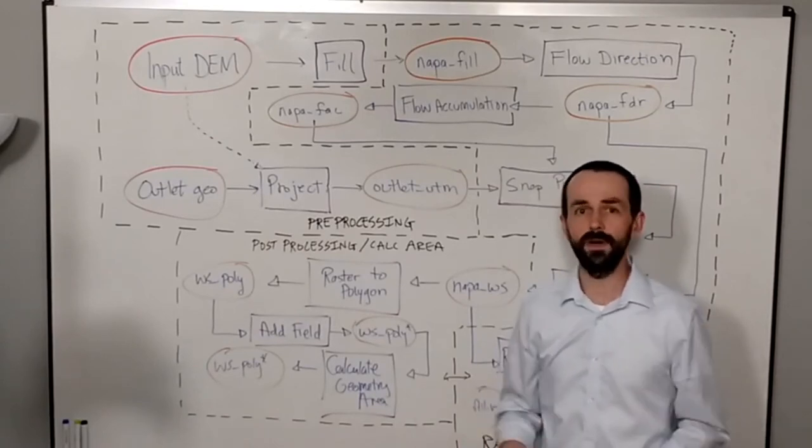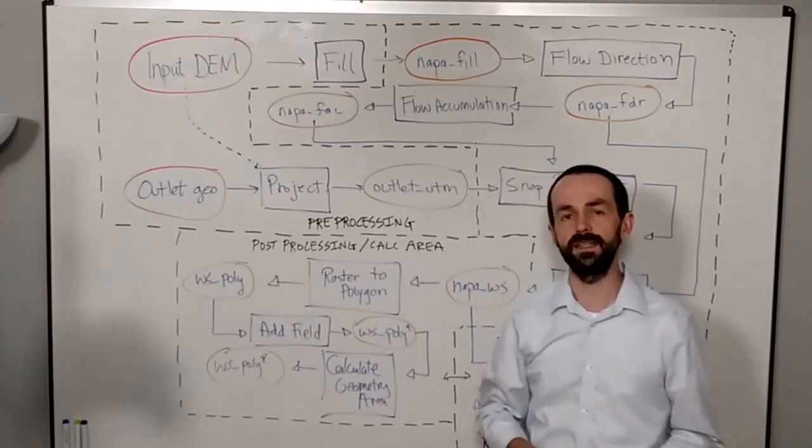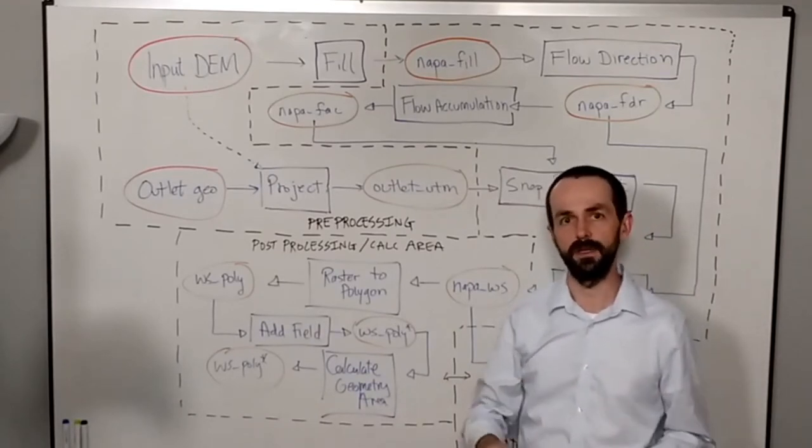Or all of the watersheds for the entire North America? The idea here is to build an automation process or an automation workflow.